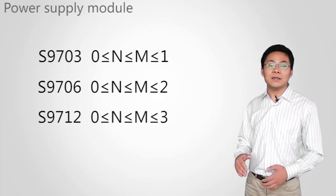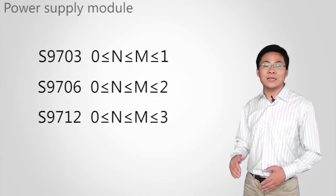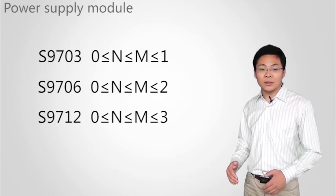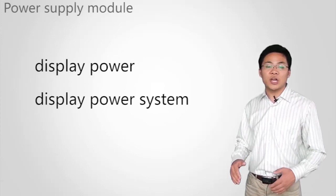For S9712, the value range is N is no less than 0, M is no less than N, and M is no more than 3. You can run the display power or the display power system command to check the power status.